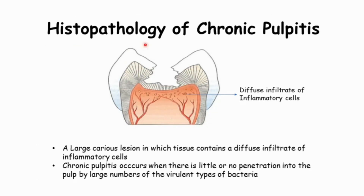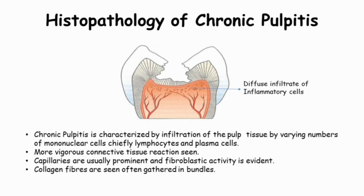Next is the histopathology of chronic pulpititis. A large caries lesion in which the tissue contains a diffused infiltrate of inflammatory cells. Chronic pulpititis occurs when there is little or no penetration into the pulp by large numbers of virulent types of bacteria.